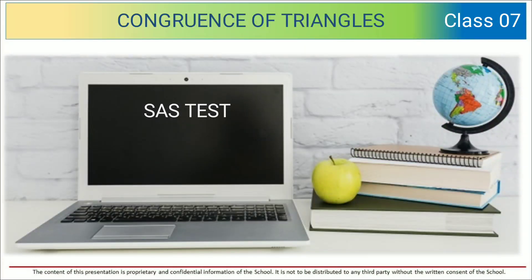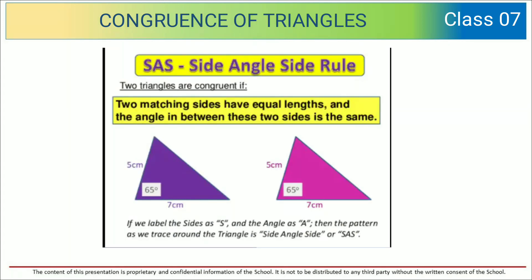Hello dear children, welcome back to your maths class. Today we are going to discuss the SAS test. SAS is the Side-Angle-Side rule. Two triangles are congruent if two matching sides have equal lengths and the angle in between these two sides is the same. So 5 centimeters and 7 centimeters is given, and the angle is 65 degrees.